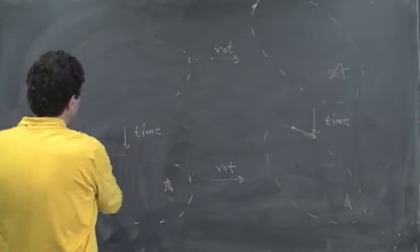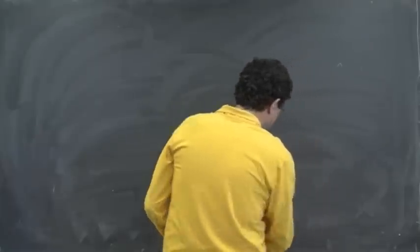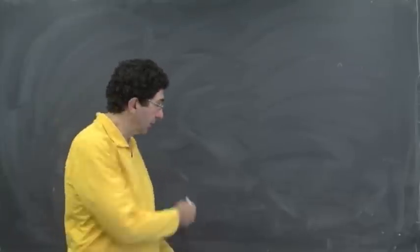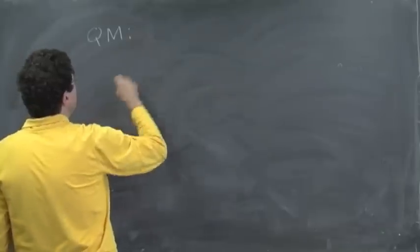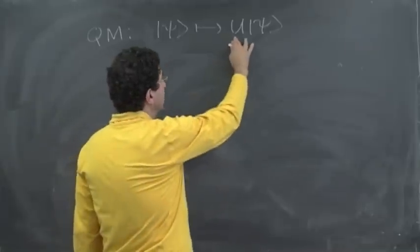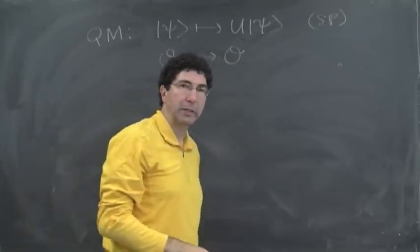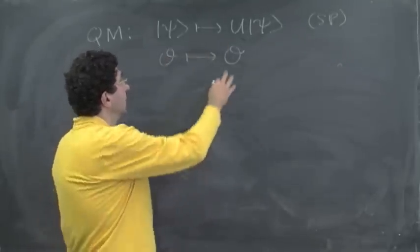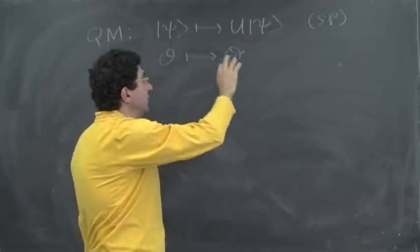So what about quantum mechanics? In quantum mechanics, we again have the idea that a symmetry is something where the symmetry transformation commutes with time evolution. It doesn't matter whether you time evolve first or do the symmetry transformation first. So in quantum mechanics, a symmetry transformation would take states to some unitary operator times a state. The symmetry is implemented by some unitary operator, and I'm using the Schrödinger picture here.